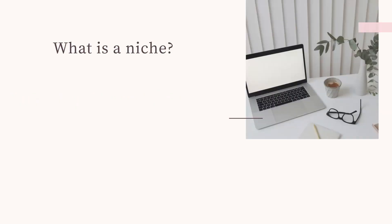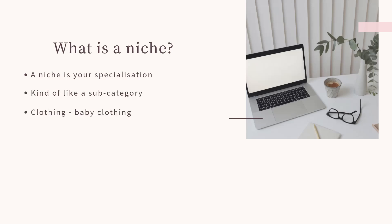So what is a niche? A niche is your specialization — it's kind of like a subcategory. So for example, in business you might sell clothing, but your niche might be baby clothing. Or you might sell food, but your niche is oriental food. So those are just some examples of a niche.